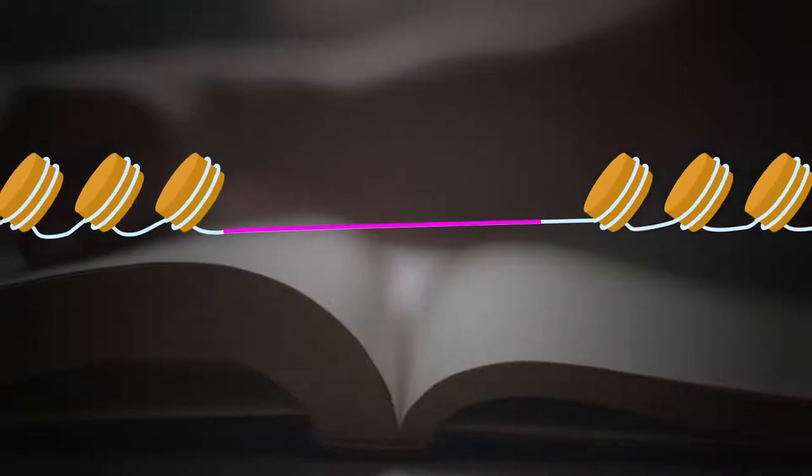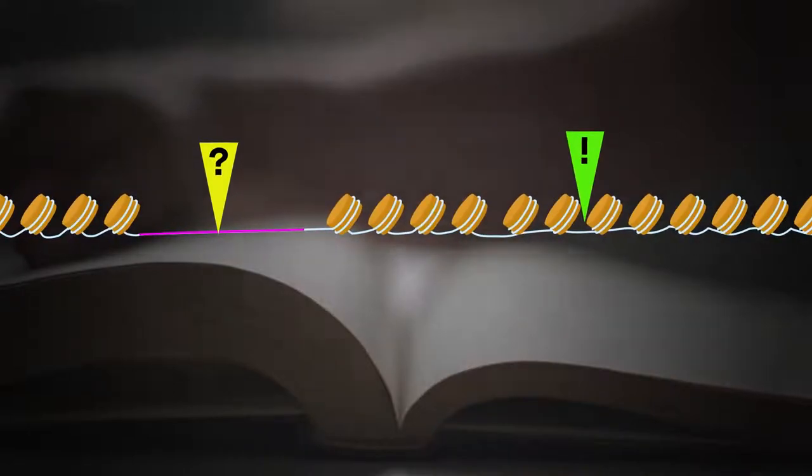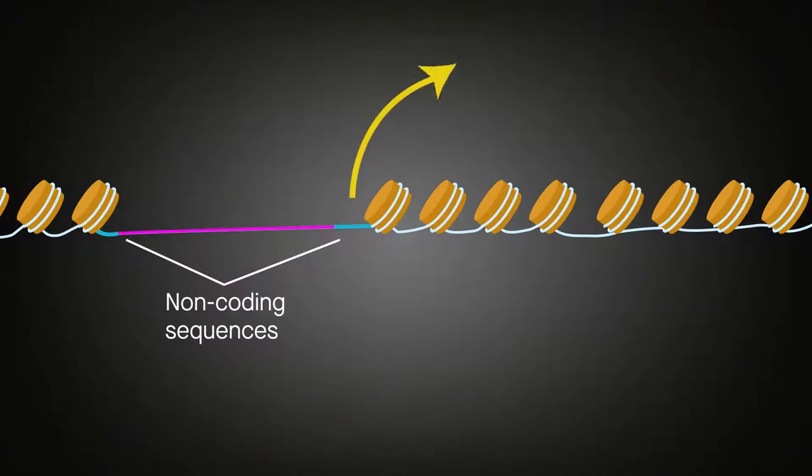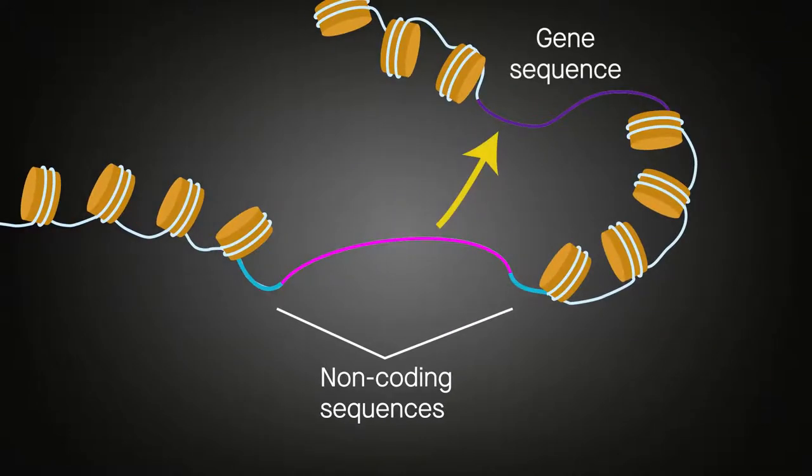Often, the relevance of details from chapter 1 isn't clear until chapter 10. Similarly, non-coding sequences often control the expression of genes far away in linear genomic distance but relatively close in three-dimensional space.